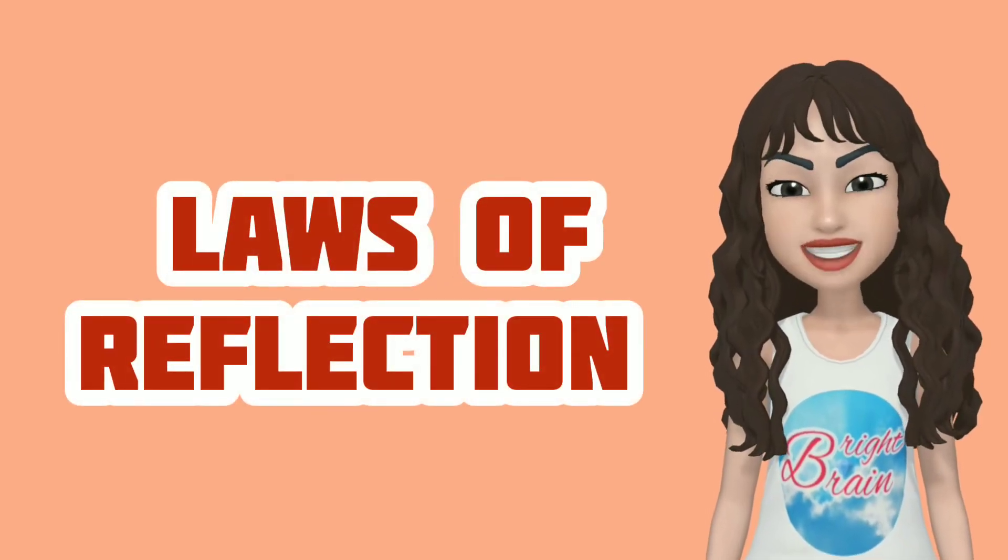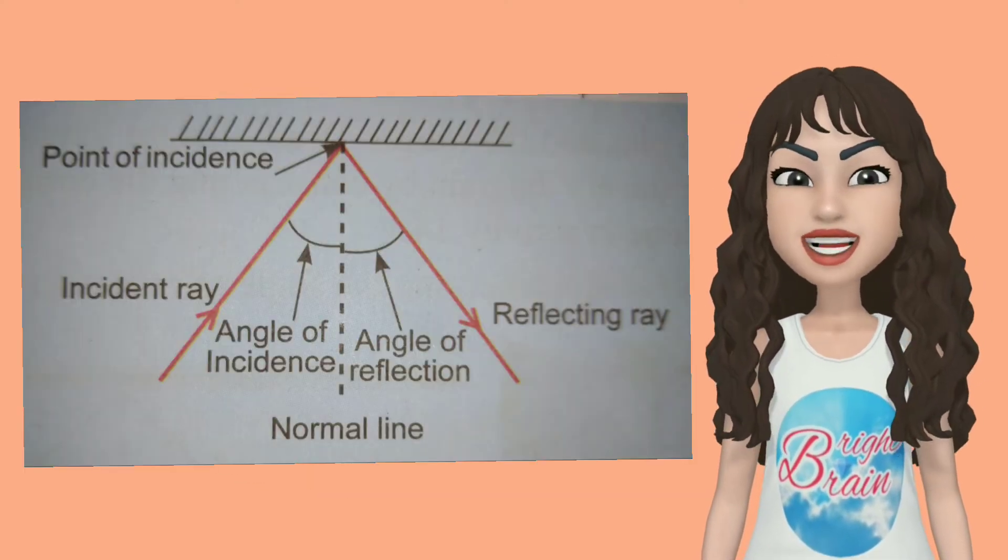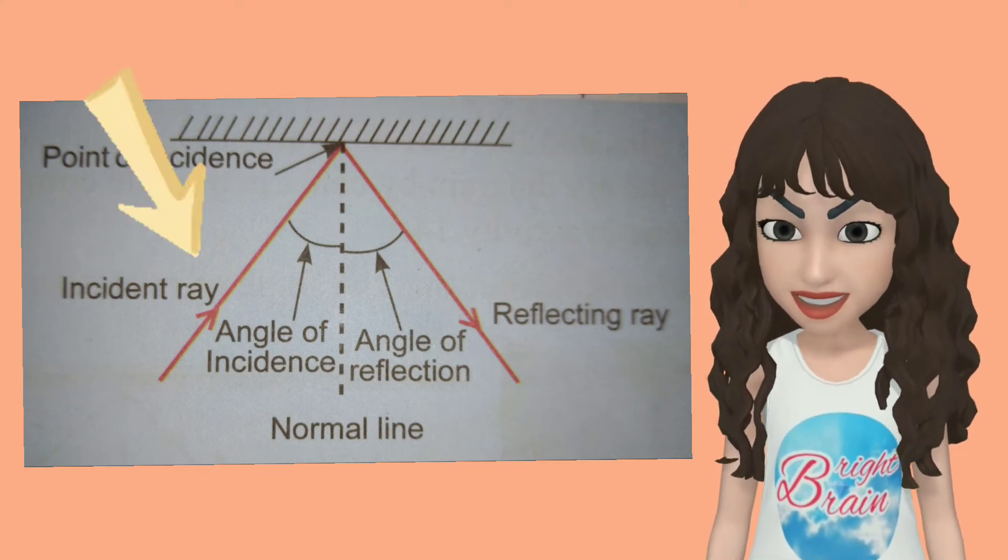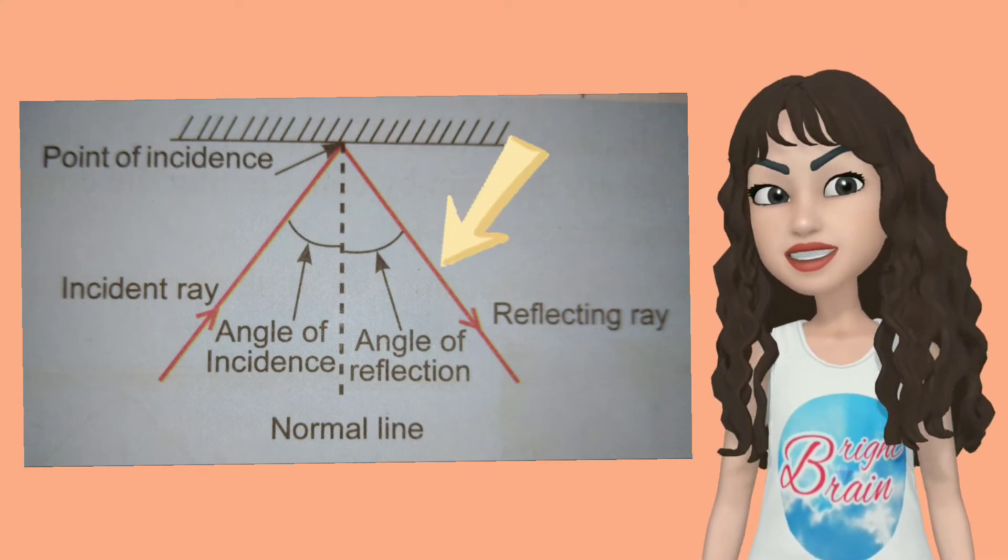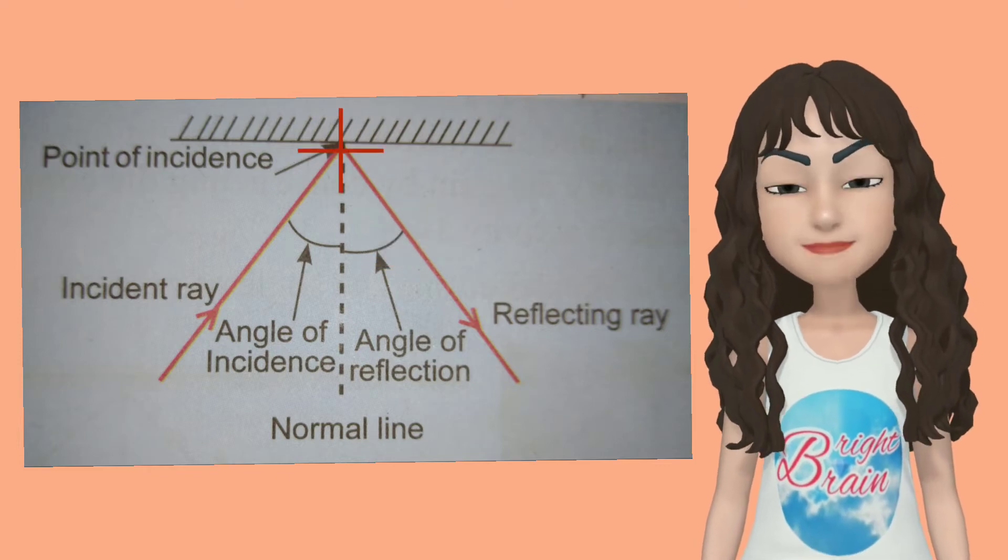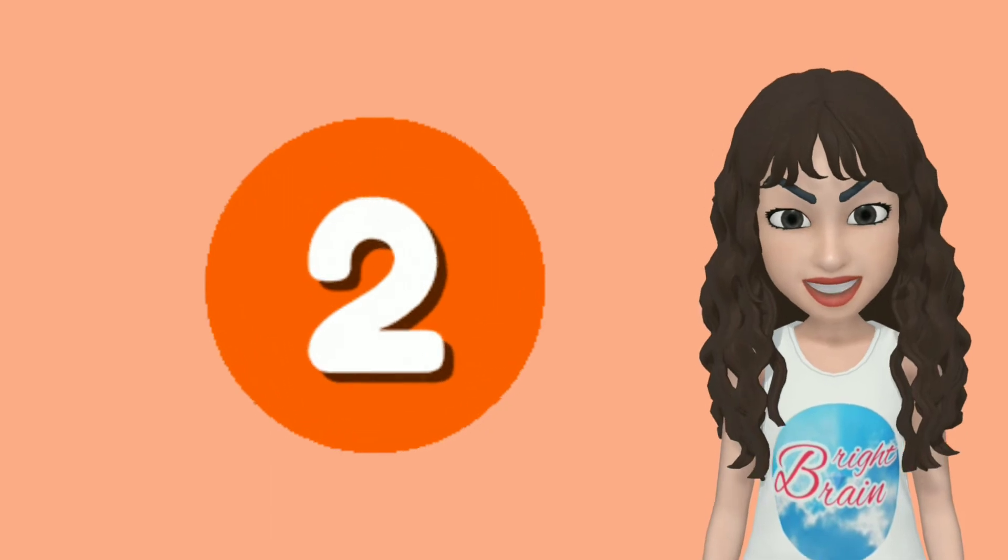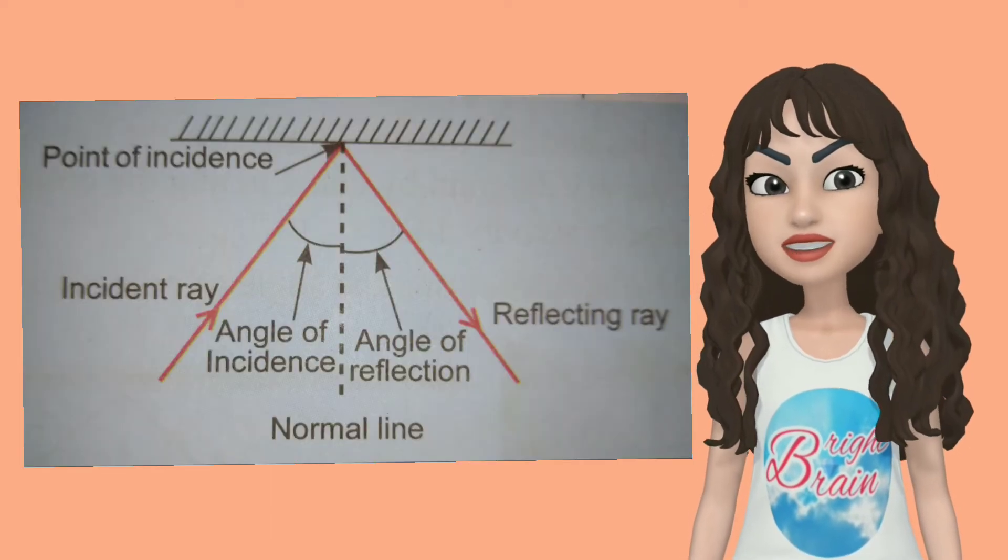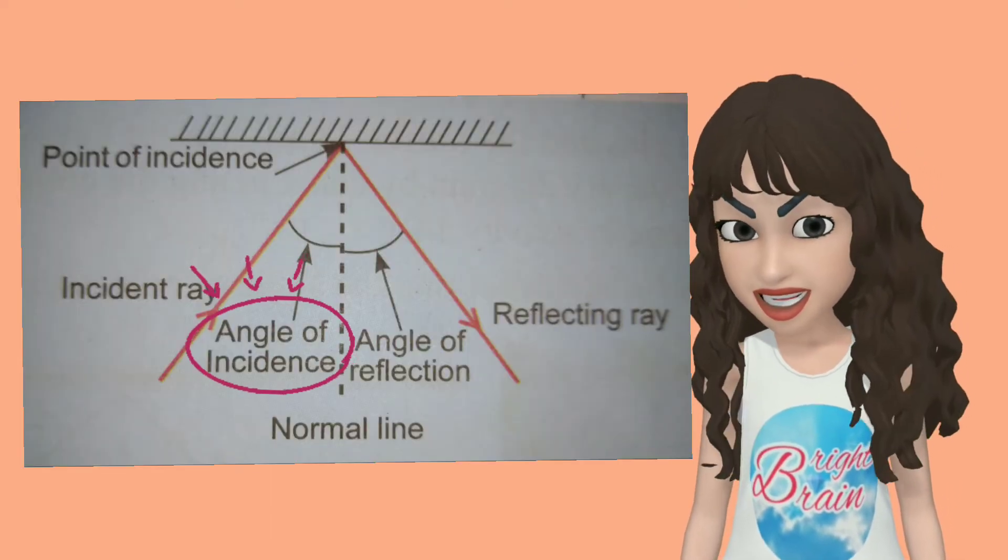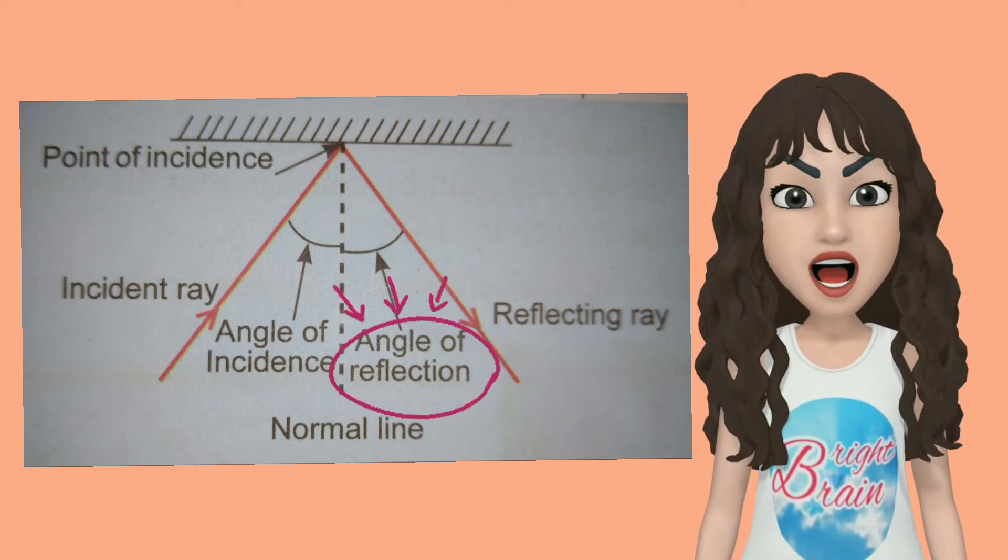Laws of Reflection. There are two laws of reflection. The first one is, when light is reflecting, the incident ray, reflecting ray and the normal line are in the same plane. The second one is, that the values of the angle of incidence and the angle of reflection are equal.